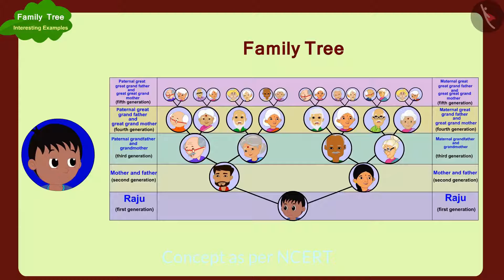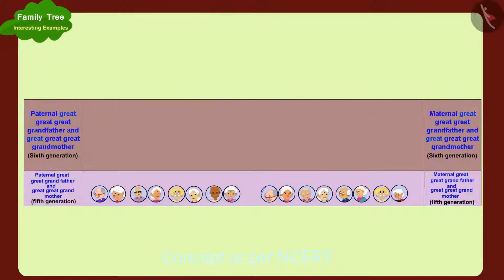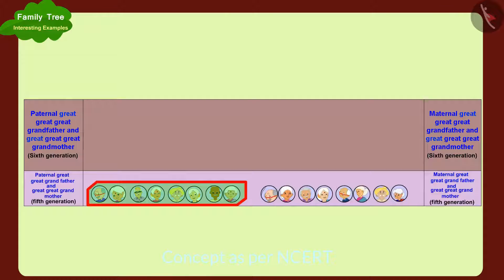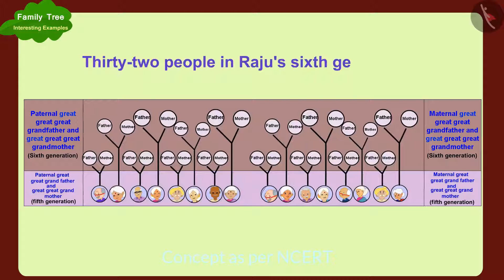Raju then asks: if he makes a sixth generation, how many people will be in it? To make the sixth generation, we need to add the parents of his maternal great-great-grandfather and great-great-grandmother, and the parents of his paternal great-great-grandfather and great-great-grandmother. In this way, there will be 32 people in Raju's sixth generation.